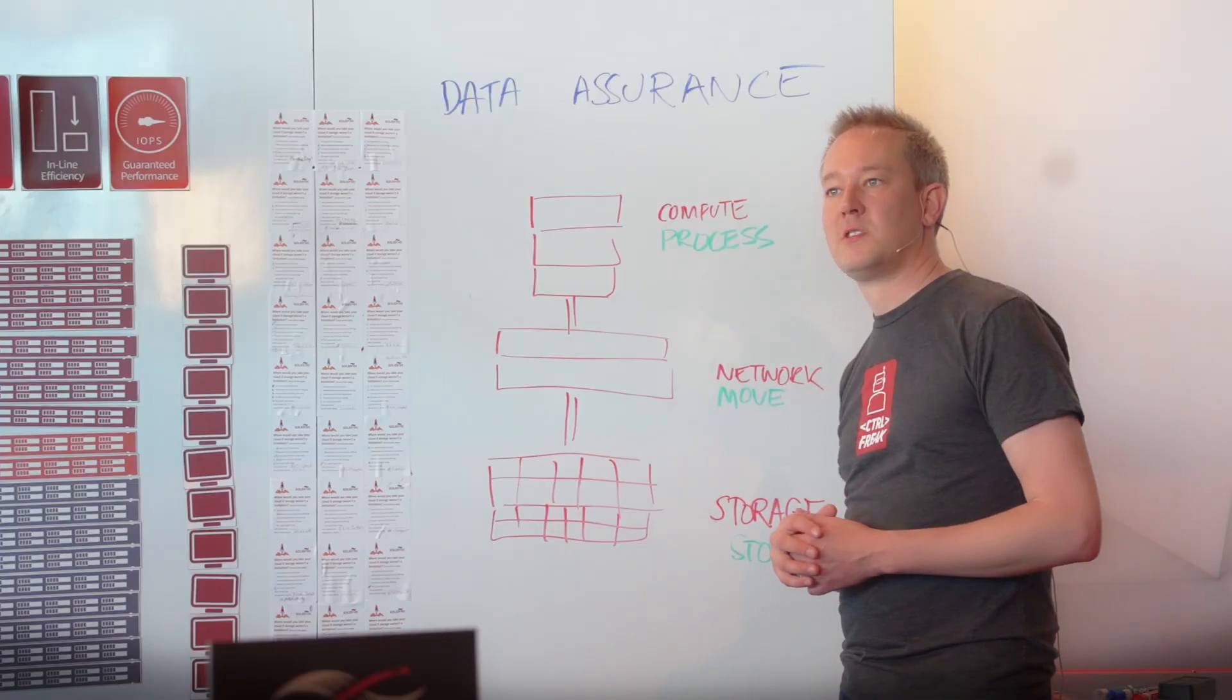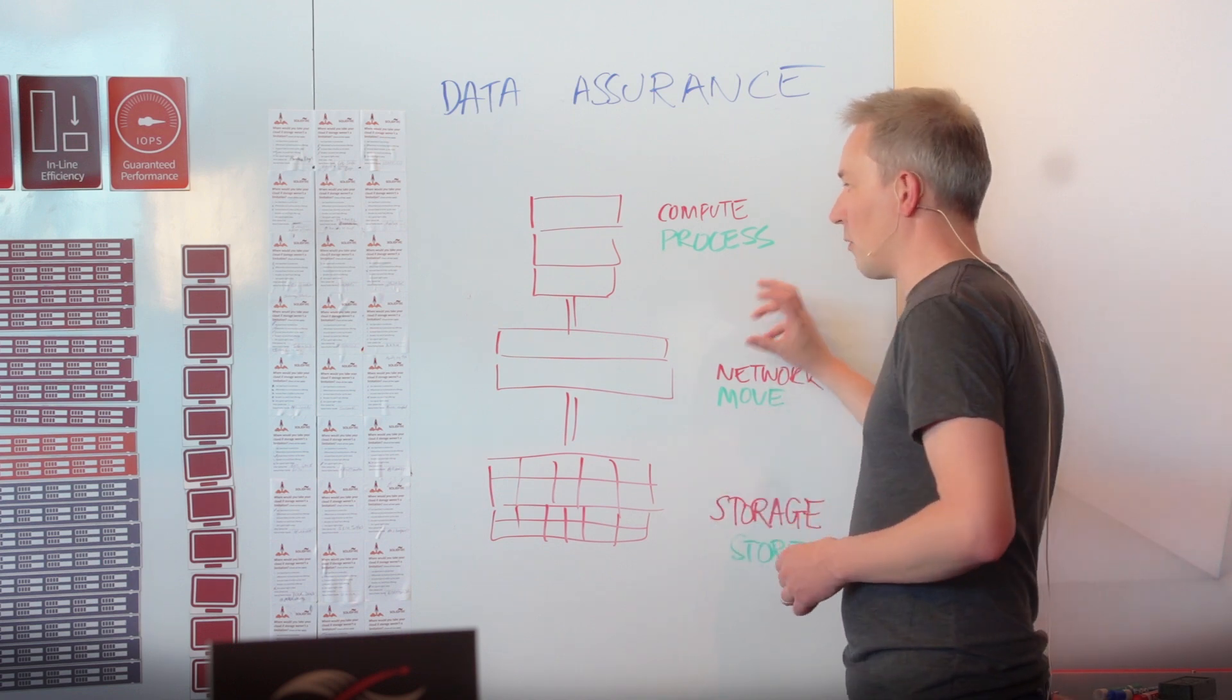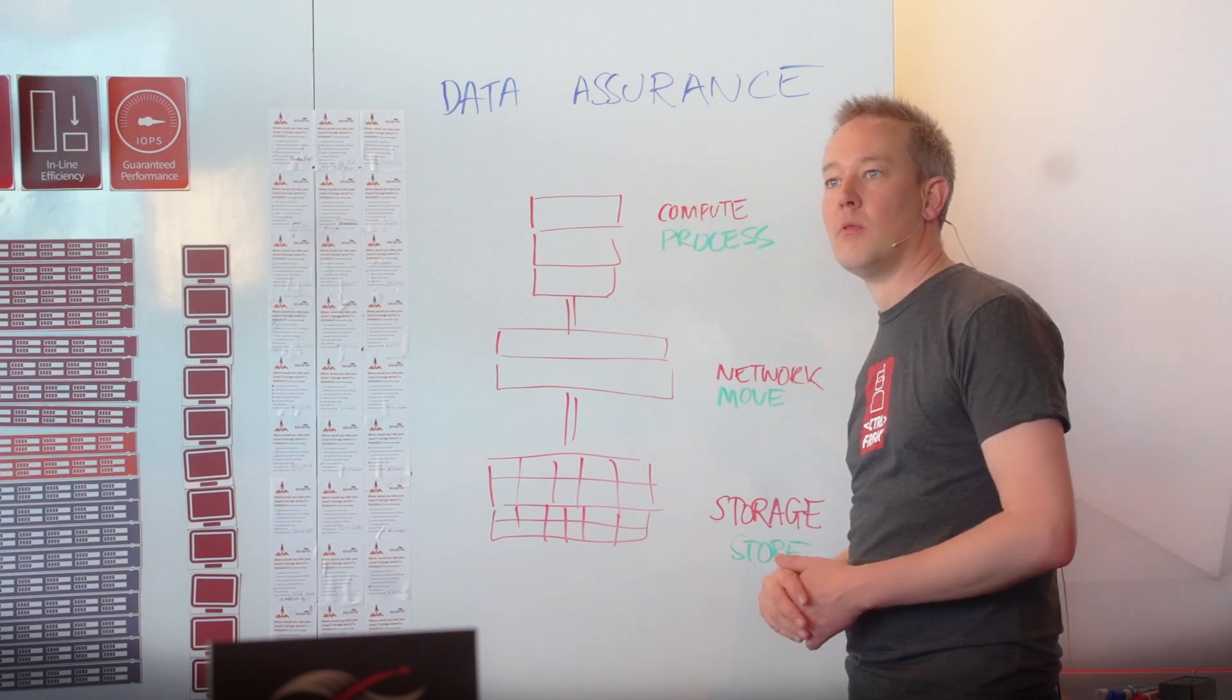For the network, it's about having resilient and multiple paths to keep that data moving around wherever it's going, up and down your stack.